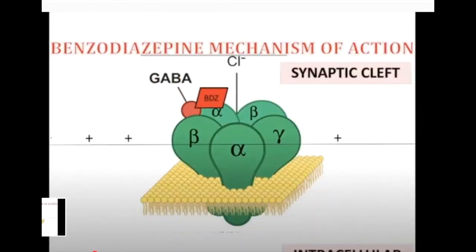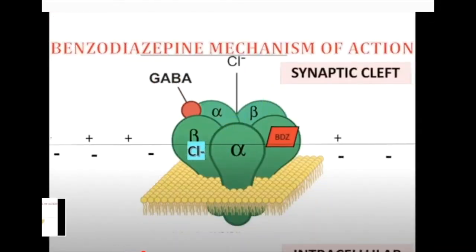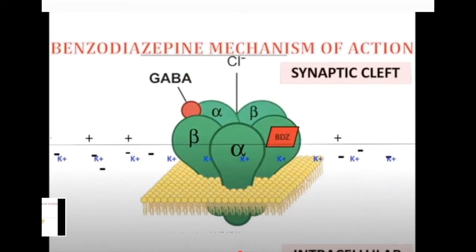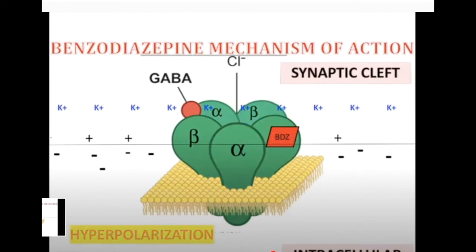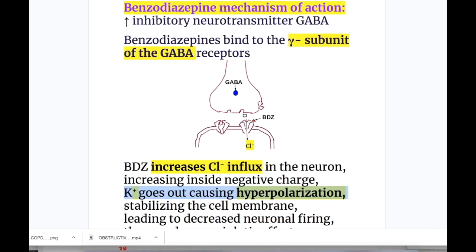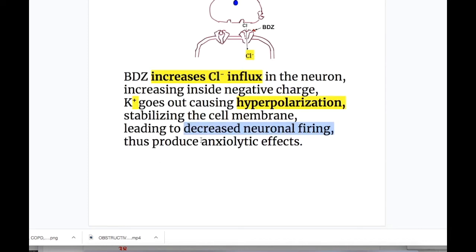Benzodiazepine attaches to the gamma receptor of GABA, causing chloride influx and increased negativity inside the cell. Potassium then goes out, causing hyperpolarization, stabilizing the cell membrane, leading to decreased neuronal firing and producing the anxiolytic effect.